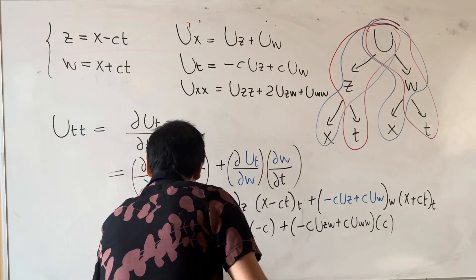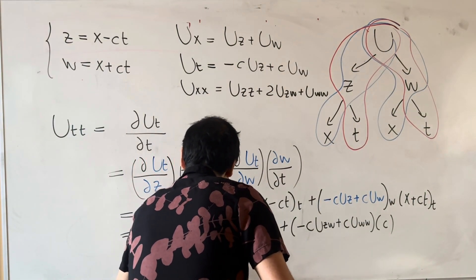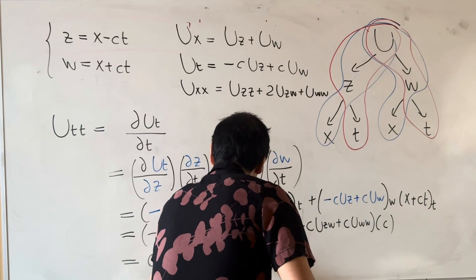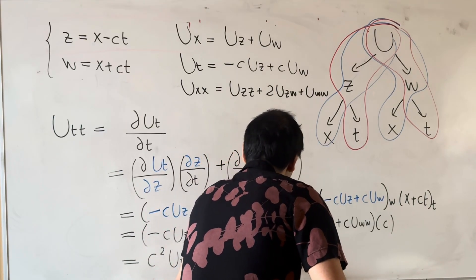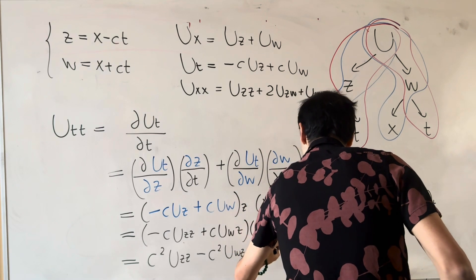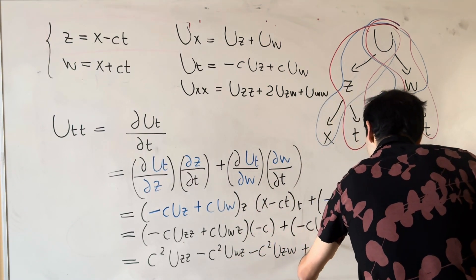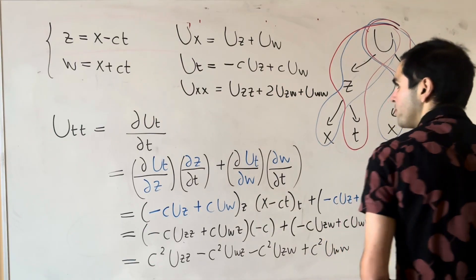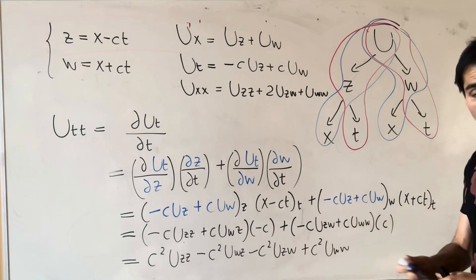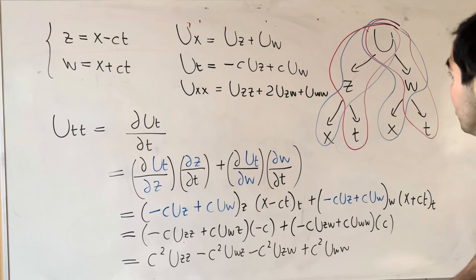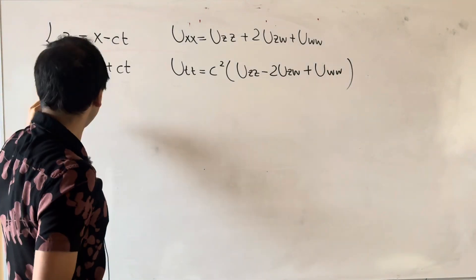And if you expand this out, you end up getting, I believe, c squared U_zz minus c squared U_wz, and then minus c squared U_zw, and then plus c squared U_ww. Which, if you want, you can simplify. So I just rewrote this for clarity. And now step three.